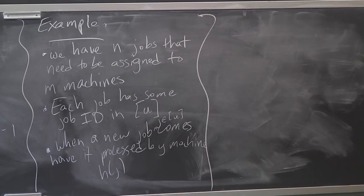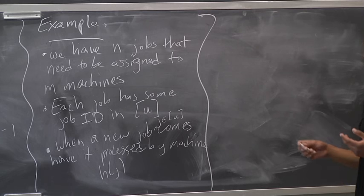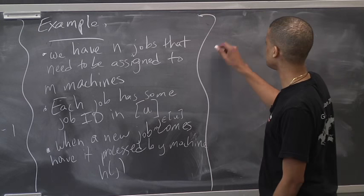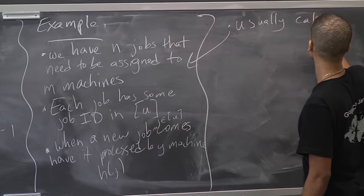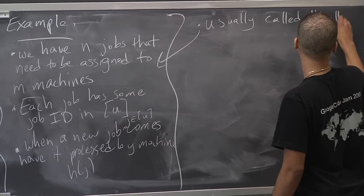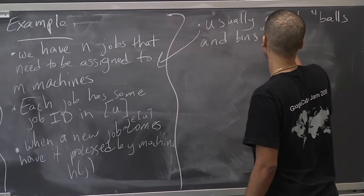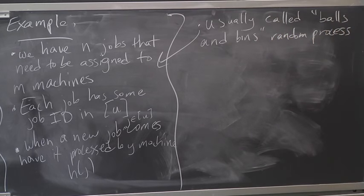We want to understand how well this behaves - does any machine get overloaded? We'd like each machine to have N over M jobs. This is usually called the balls and bins random process, where we have N balls thrown randomly into M bins.